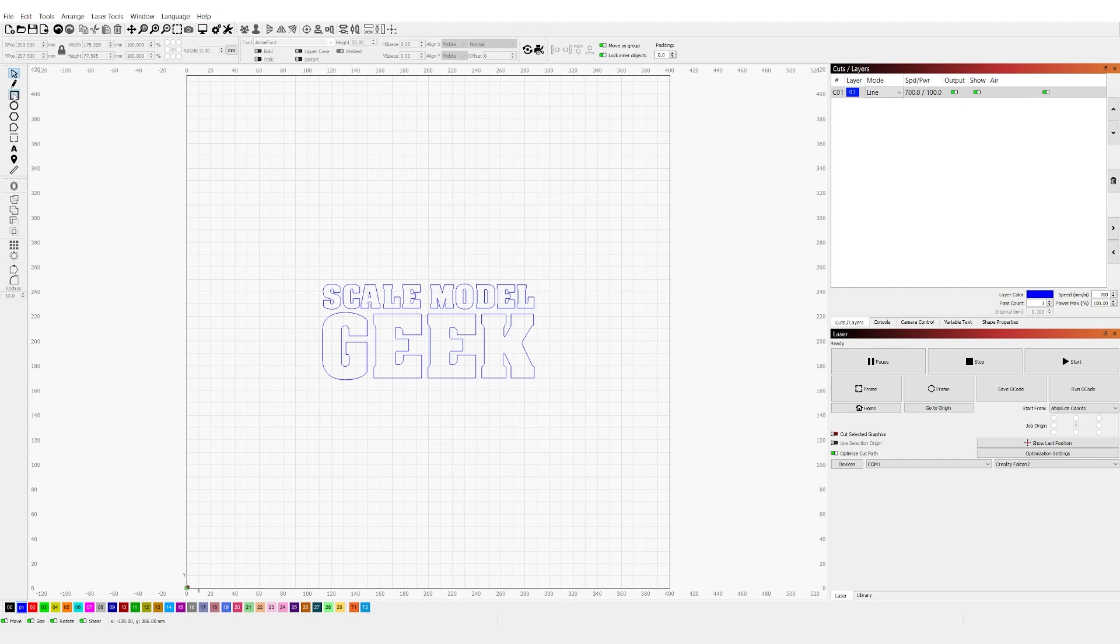I then selected the rectangle tool and created a rectangle around the elements. Now I have all my three elements in place and the minor adjustments all locked in. I now need to tell the laser what to do with those elements. Currently everything's highlighted in blue so let's head up to the top right hand corner, select mode to fill. In this particular job I want the Scale Model Geek to be engraved and the rectangle to be cut out so I need to give the laser different instructions for each element. So now the laser knows it needs to engrave Scale Model Geek.